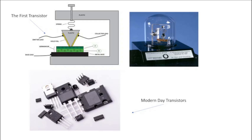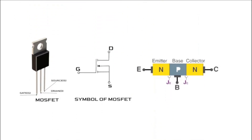Today's technology would not have existed without the invention of transistors in the 20th century. A transistor is a semiconductor device that is an electronic component. It relies on the electronic properties of semiconductor material for its function. Its conductivity lies between conductors such as metallic copper and insulators like glass. Transistors are used to amplify or switch electrical signals and power.